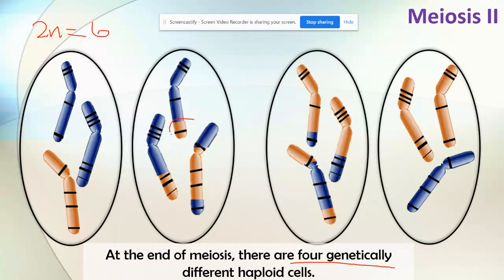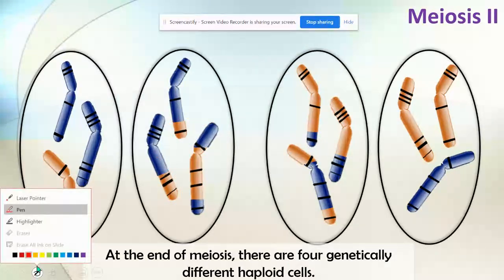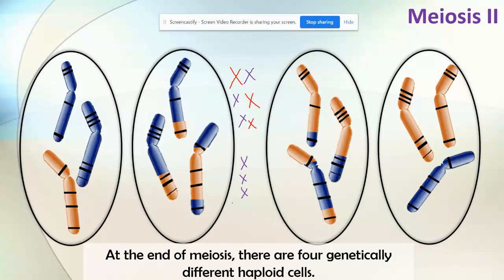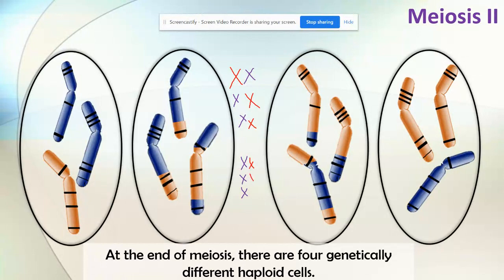We get four genetically different haploid cells at the end. The reason they're different is because of crossing over creating recombinant chromosomes, but also because of the way the homologous pairs lined up in the middle of the cell. For example, very easily all the purple chromosomes could have been on the left, creating different combinations of chromosomes in the gametes. So independent assortment is another source of variation.